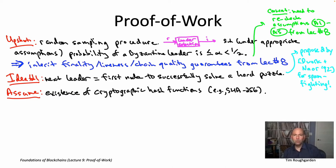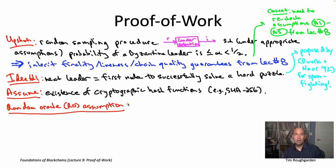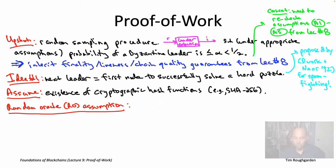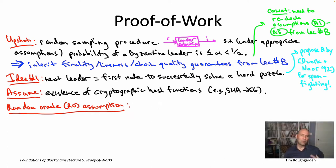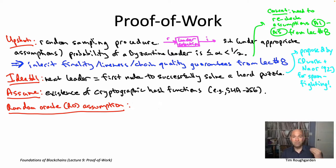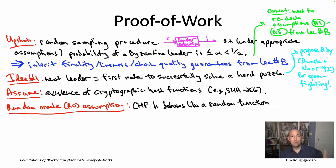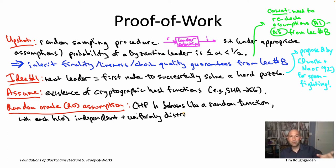To formalize the idea of an inscrutable, unpredictable cryptographic hash function, let me introduce the random oracle assumption. We're going to adopt this for the purposes of our mathematical analysis. It states that a cryptographic hash function like SHA-256 may as well be a random function — meaning for each possible input, the corresponding output is an independent and uniformly random draw from the range of the hash function.